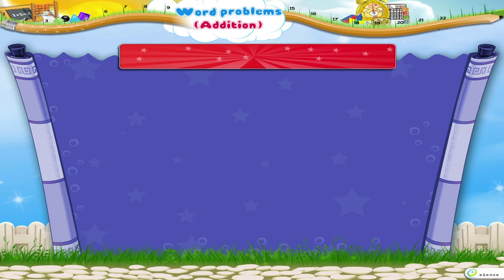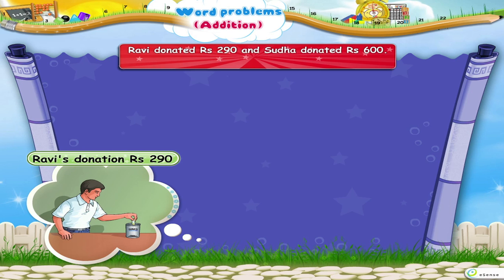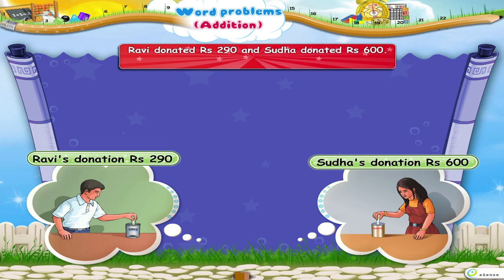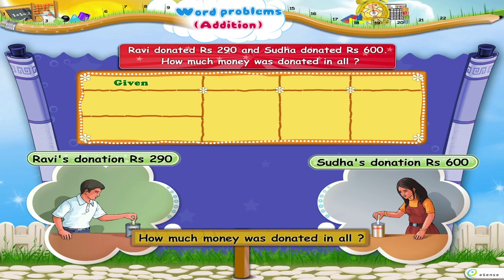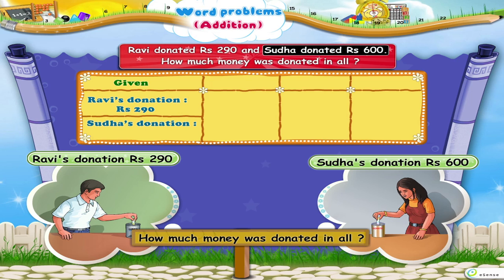Now let us revise. Read the question and fill the table. Ravi donated rupees 290 and Sudha donated rupees 600. How much money was donated in all? What is given? Ravi's donation: rupees 290. Sudha's donation: rupees 600. What is to be found out? Total donation.